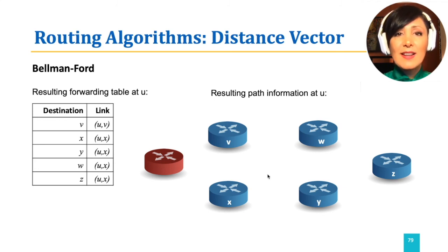For example, to reach node x, the direct link u and x will be taken. To go to node v, the direct link u and v will be taken. To go to node y, the next hop will be x, and the link u and x will be taken.